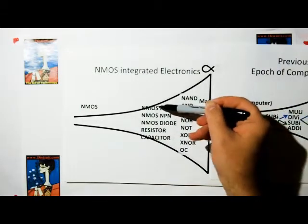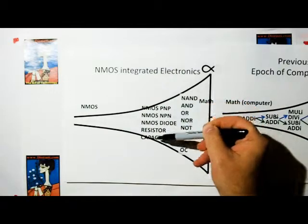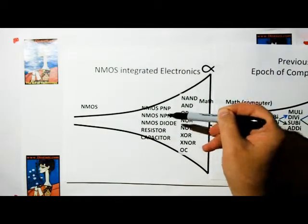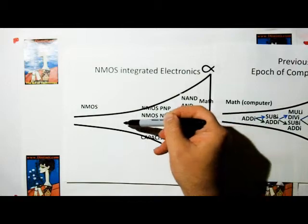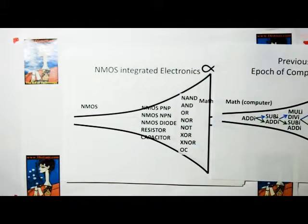These basic logic gates are created from the basic NMOS components, a PNP transistor, an NPN transistor, yada yada yada. Again, as you go down the epoch, things become simpler and simpler.